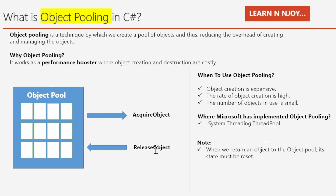When an object is needed, we can simply call the acquire object method from the pool and do our work. There is no more overhead for creating and managing objects.